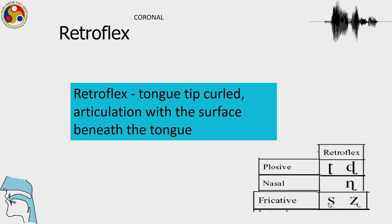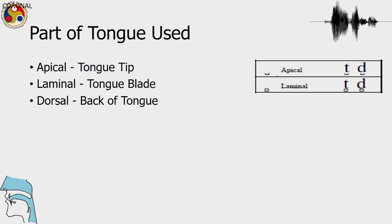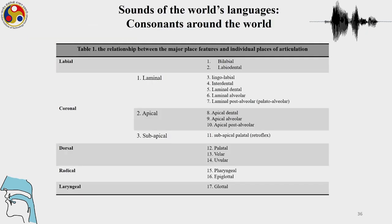These are the symbols used to show retroflexes: da, da, na, sha, and ja. Depending on whether the part of the tongue used is apical or laminal, these two diacritics are used to show apical versus laminal. So far for labials we have looked at bilabial, labiodental, linguolabials, interdental, laminal dental, laminal alveolar, and laminal post-alveolar. In the coronal region we have seen apical dentals, apical alveolars, apical post-alveolar, and in the sub-apical region we have seen sub-apical palatals which are retroflexes.